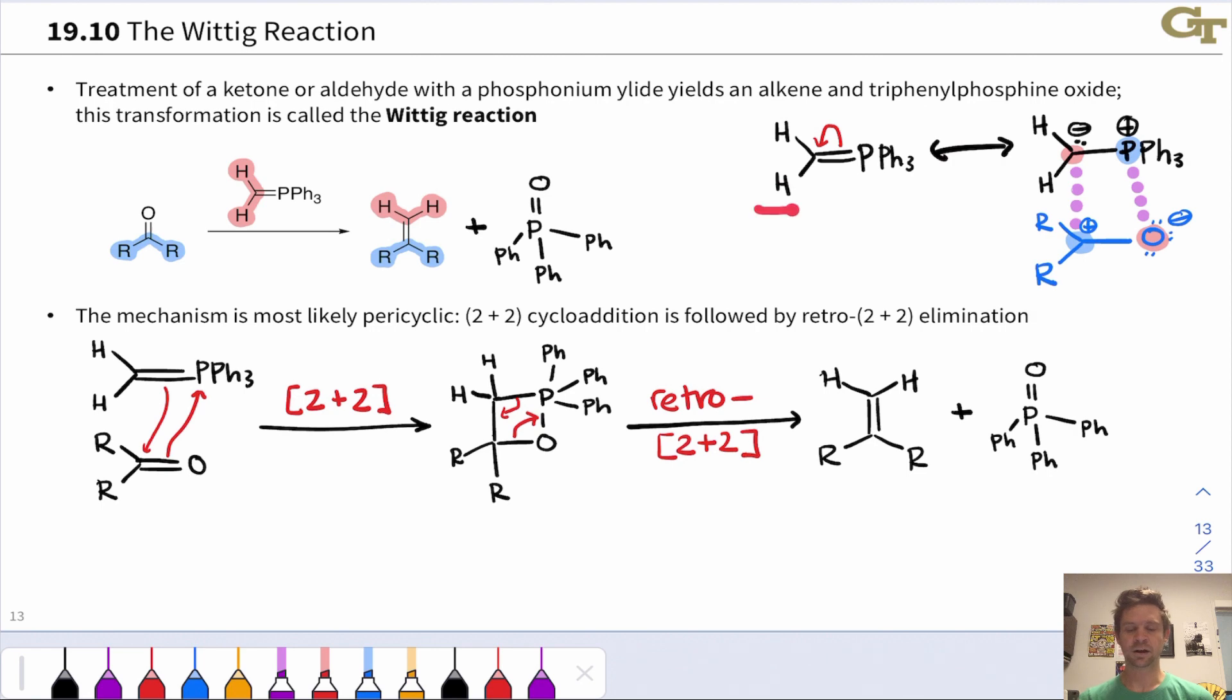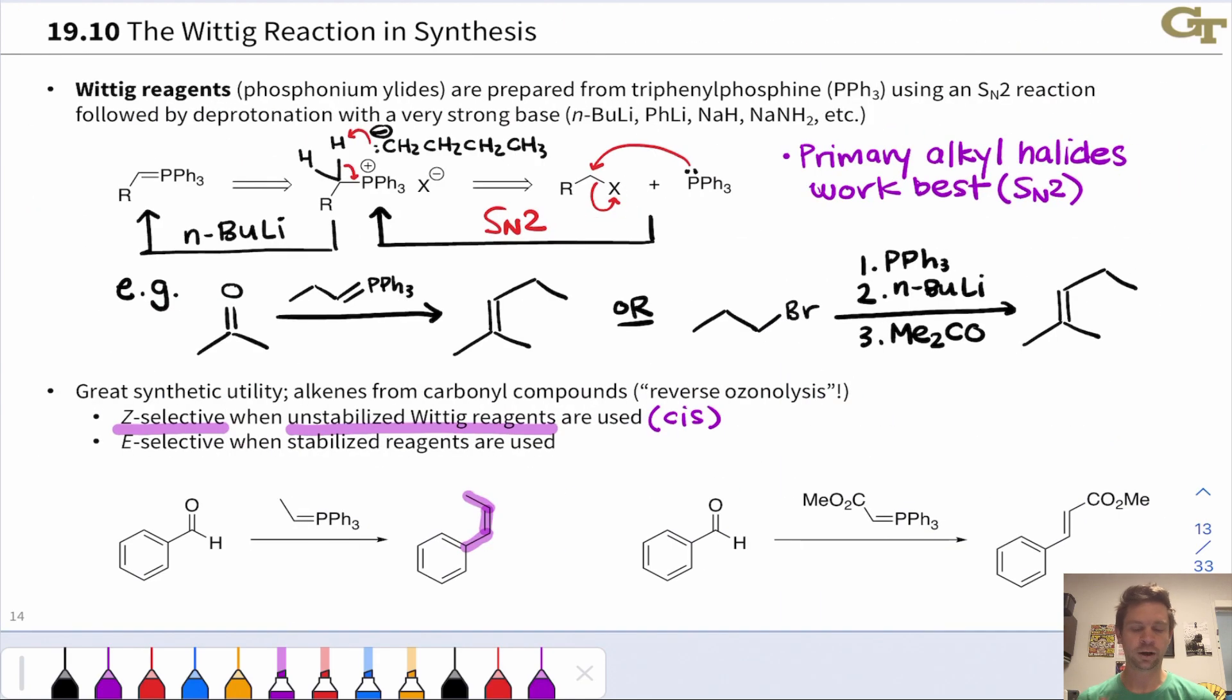This is still an unstabilized ylid with only hydrogens or only carbon groups connected to the anionic carbon. Those unstabilized ylids give the cis isomer predominantly.